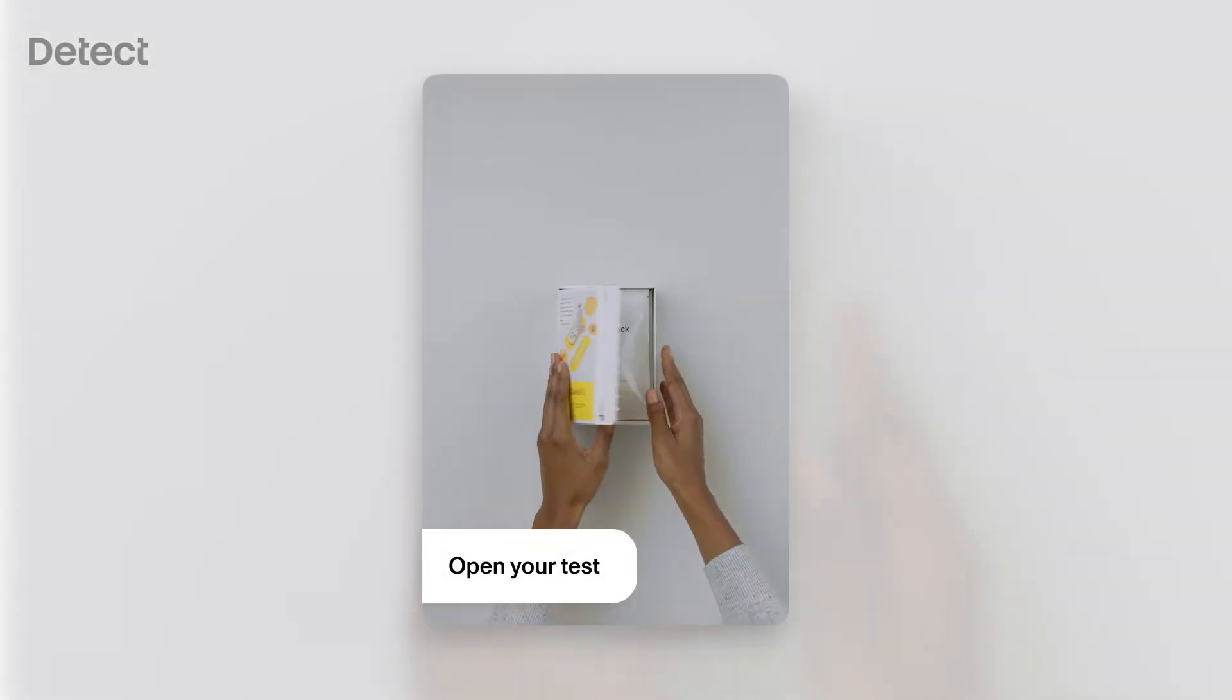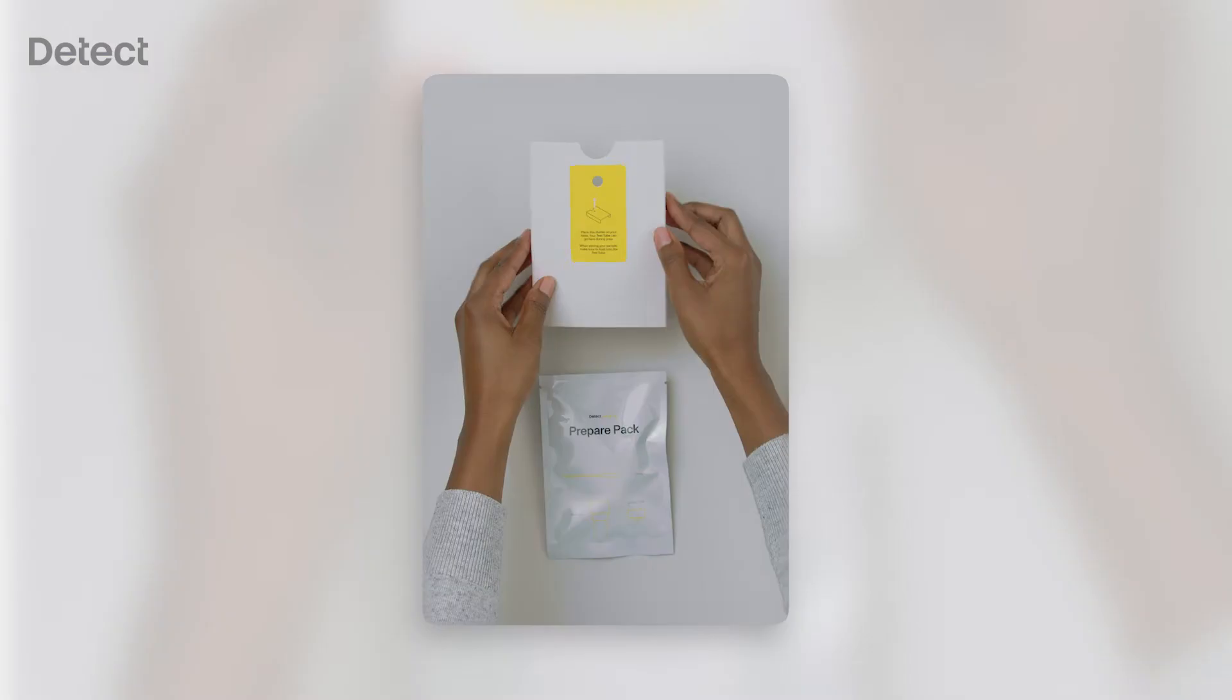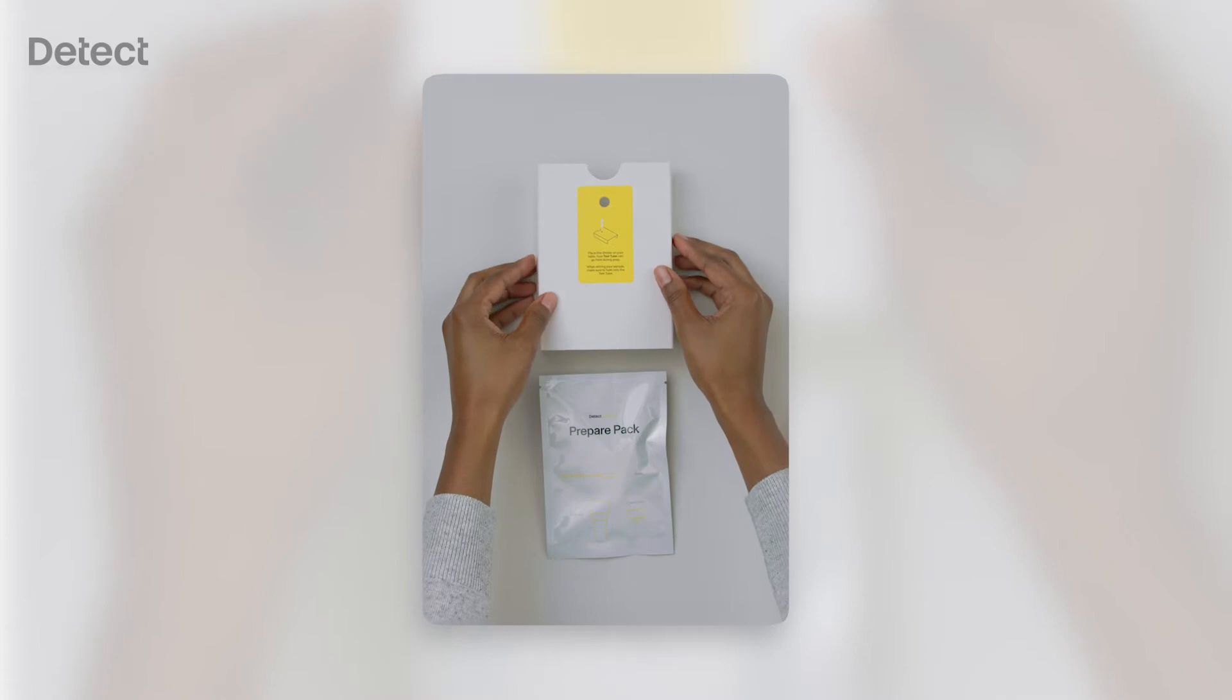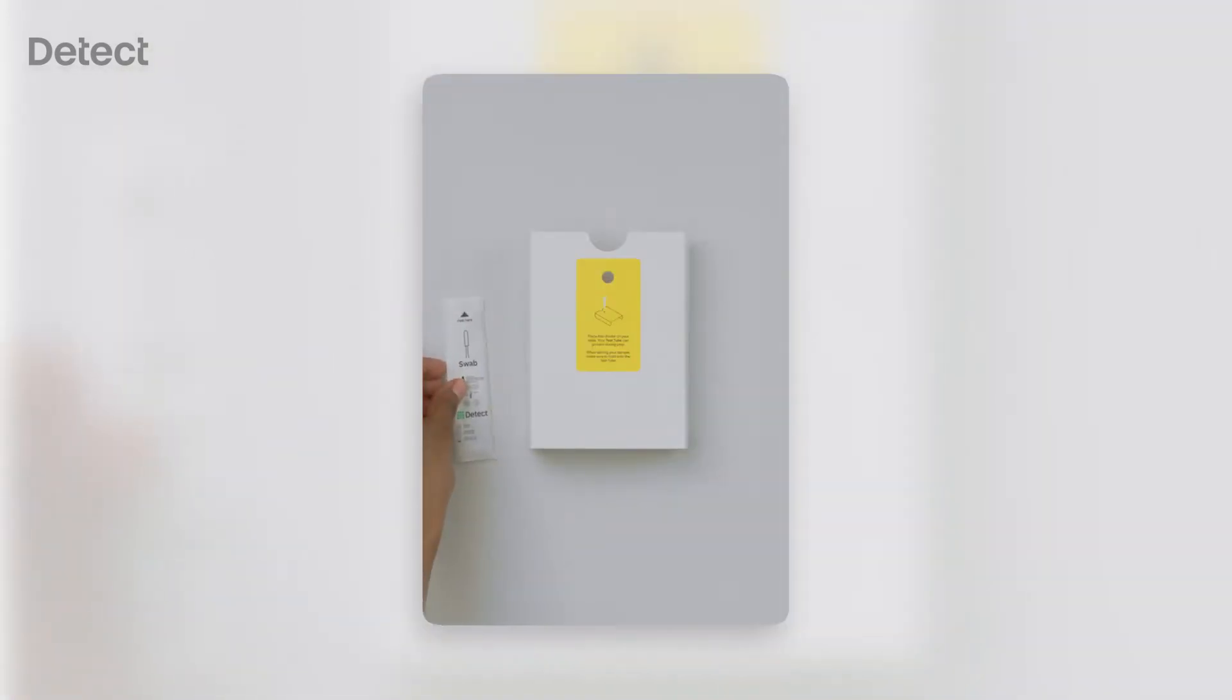Open your Detect COVID-19 test. Take out the Prepare Pack and set the cardboard divider on a flat surface. Open the Prepare Pack, remove its contents, and set aside the pouch labeled Detect Cap.